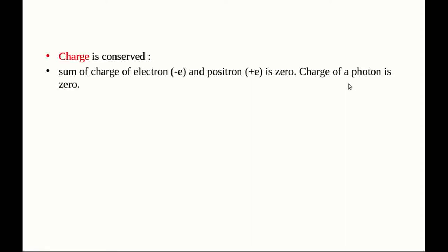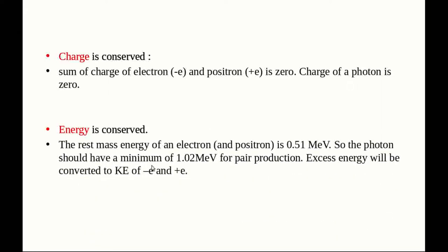The initial particle, the photon, has zero charge. The final particles — the electron and positron — also sum to zero charge, so charge is conserved. Energy should also be conserved. The rest mass energy of an electron is 0.51 MeV, that is 0.51 × 10⁶ electron volts. The positron has the same rest mass energy value.